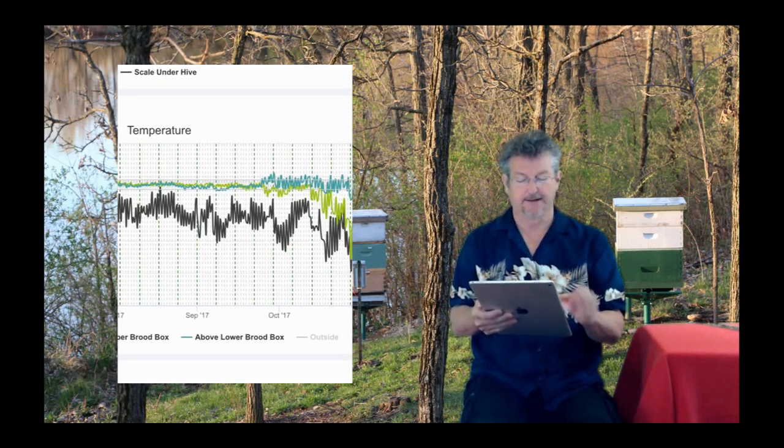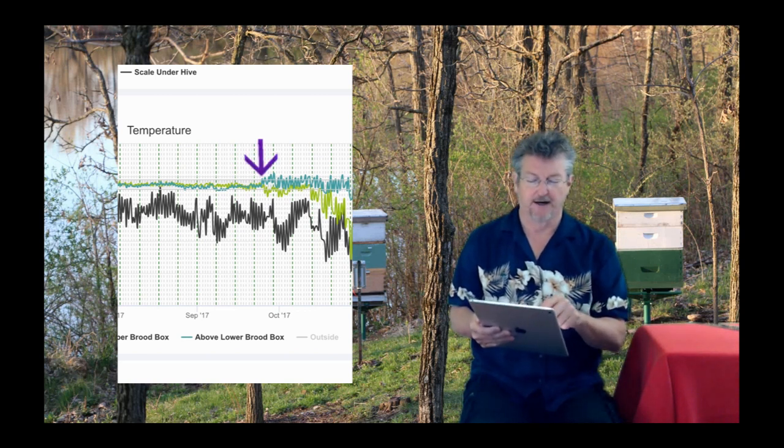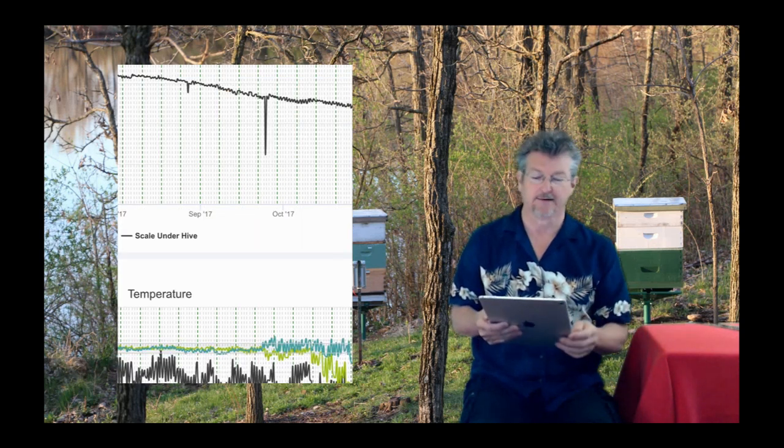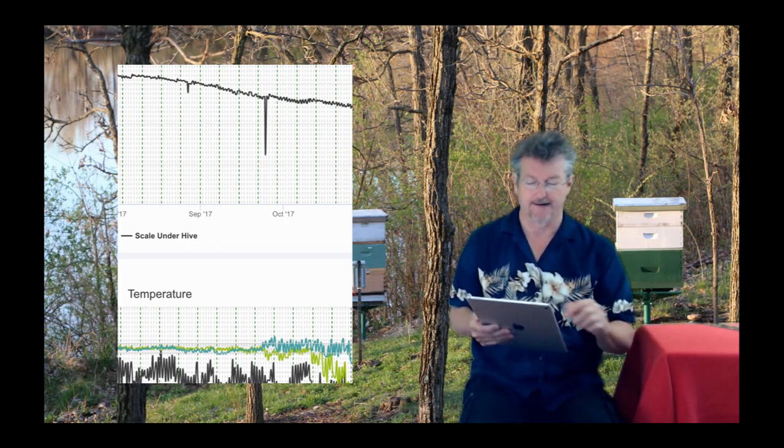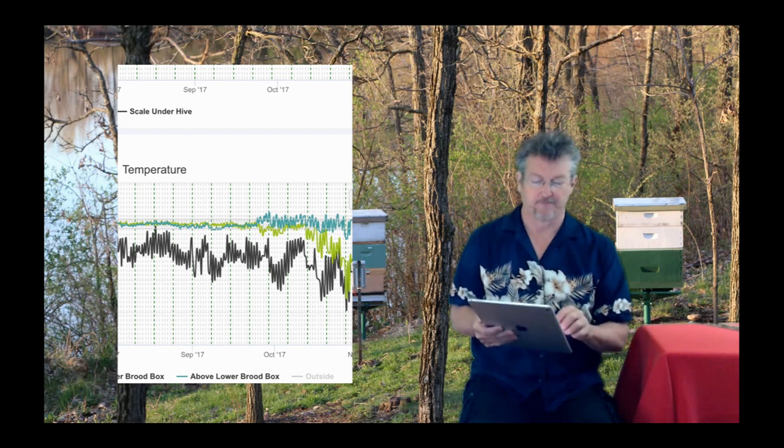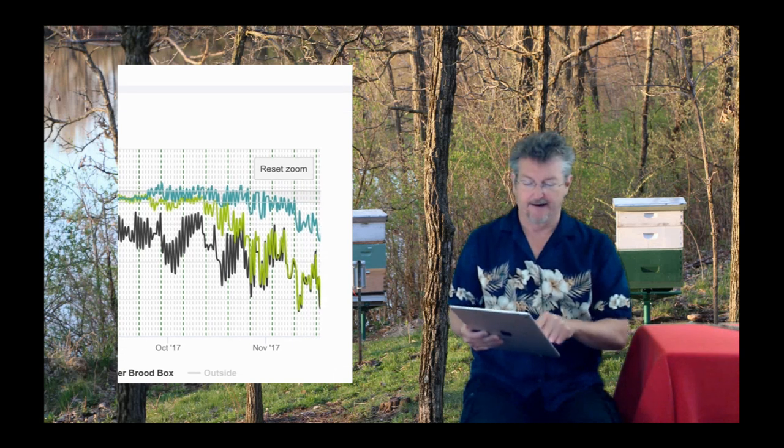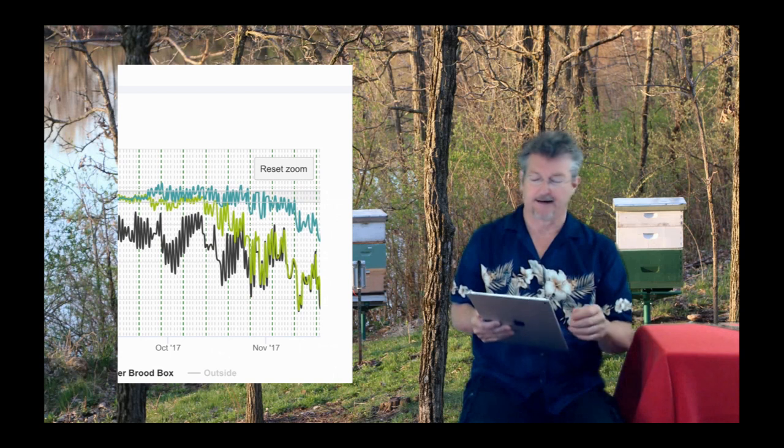As we go along here, all of a sudden in early October, something changes. If we look at the weight, we also see that was when a hive inspection was done because the boxes were unstacked and the weight went down. What happened here, we found out from the owner later, was that the queen was crushed and immediately the bees reacted to that and started not regulating as well and ultimately the hive died off.